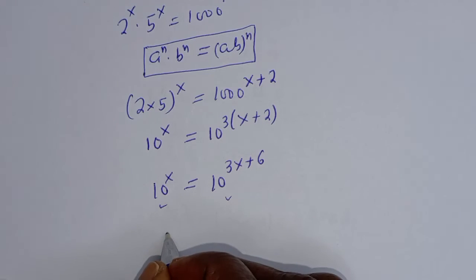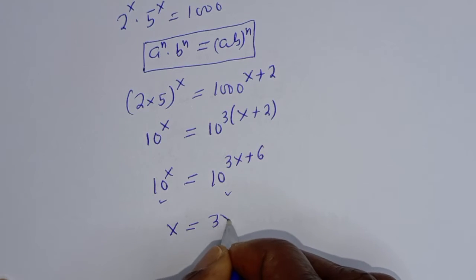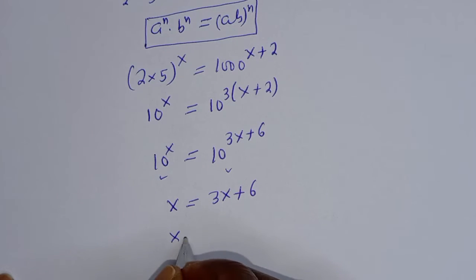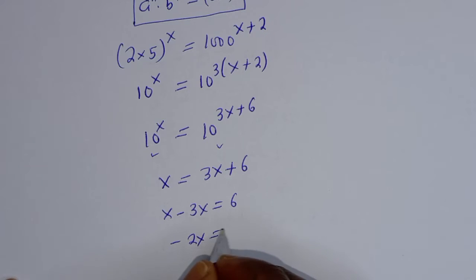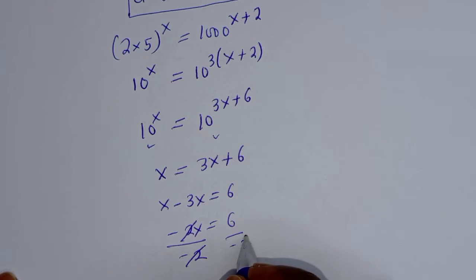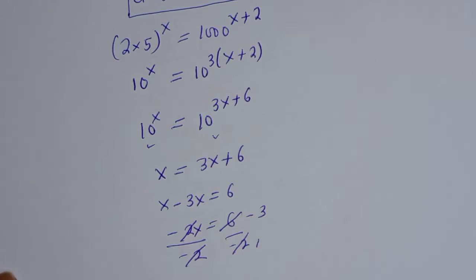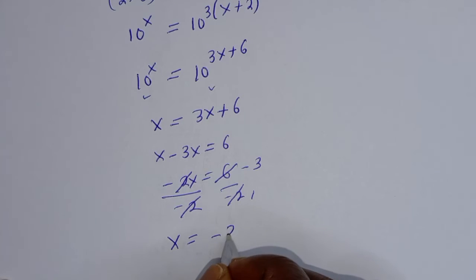Then we consider the exponents. s is equal to 3s plus 6. Then s minus 3s is equal to 6, so minus 2s is equal to 6, divided by minus 2 divided by minus 2. S is equal to minus 3.